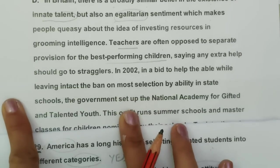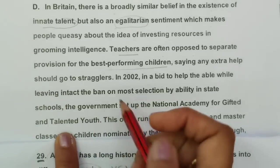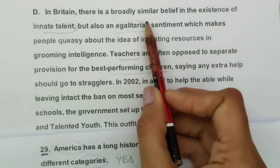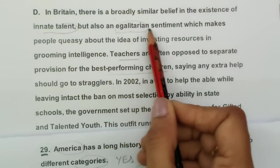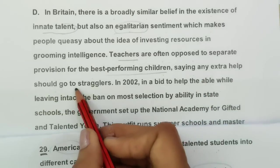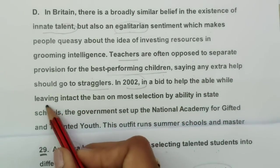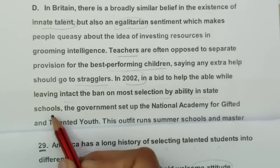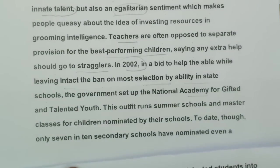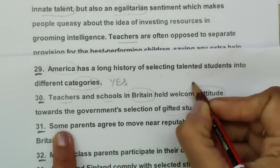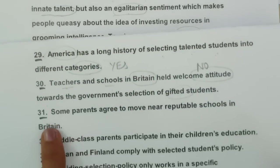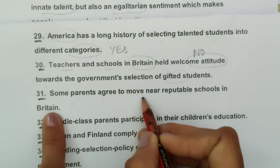The passage continues: 'In 2002, in a bid to help able living, the government set up a National Academy for Gifted and Talented.' So the government acted, but teachers were often opposed. Since the question says teachers and schools held a welcome attitude but the passage says they were 'often opposed to separate provision,' the answer is NO.